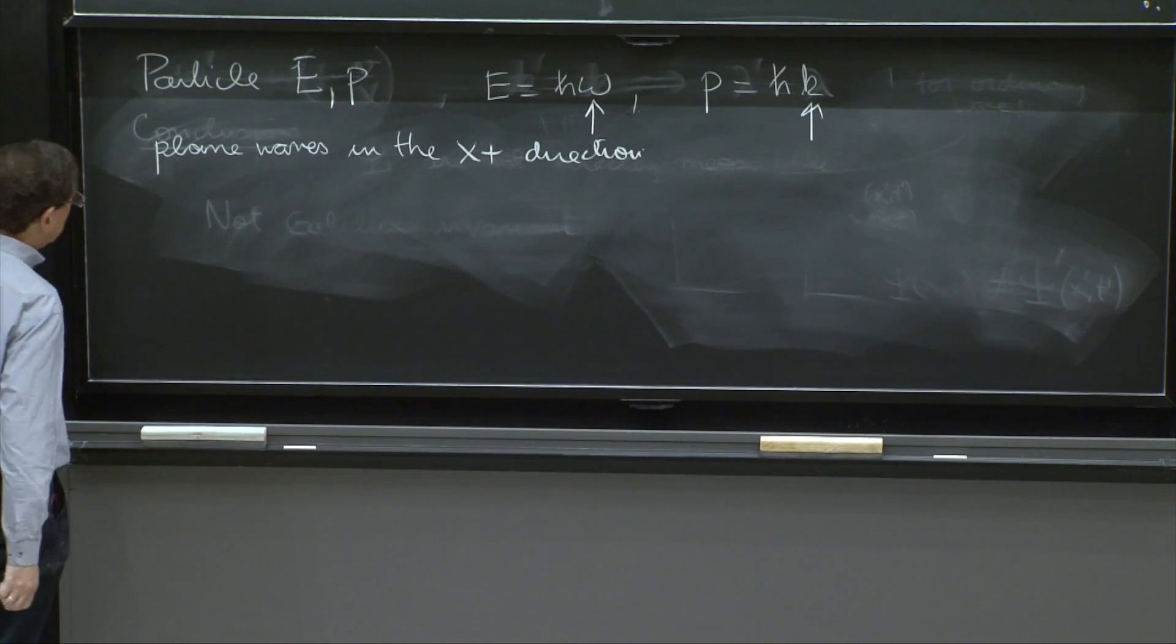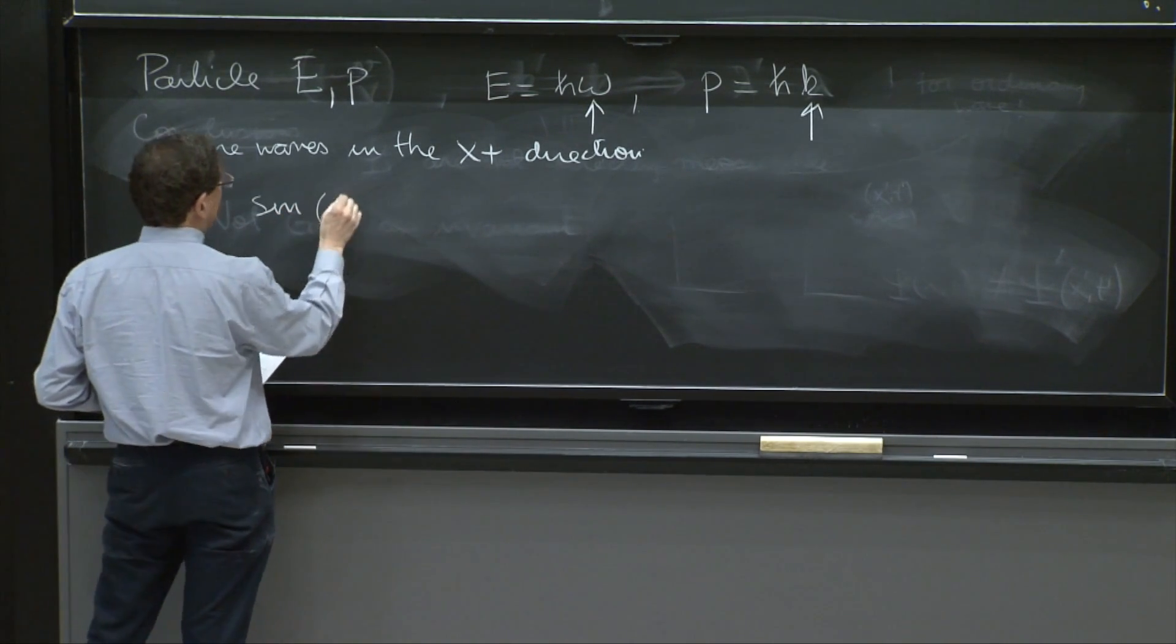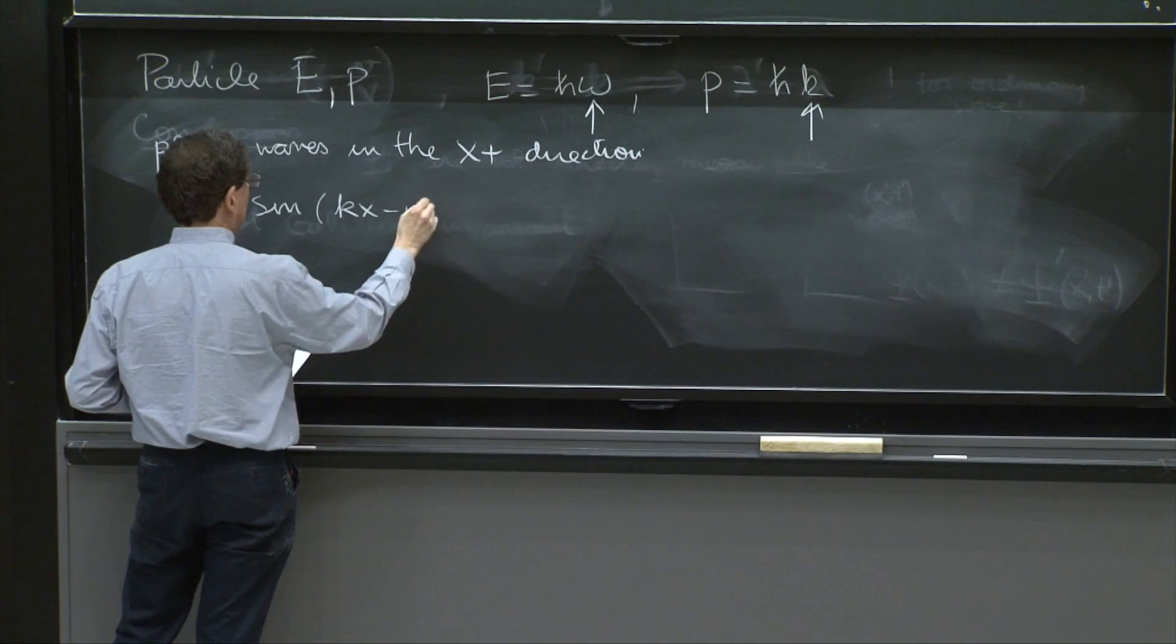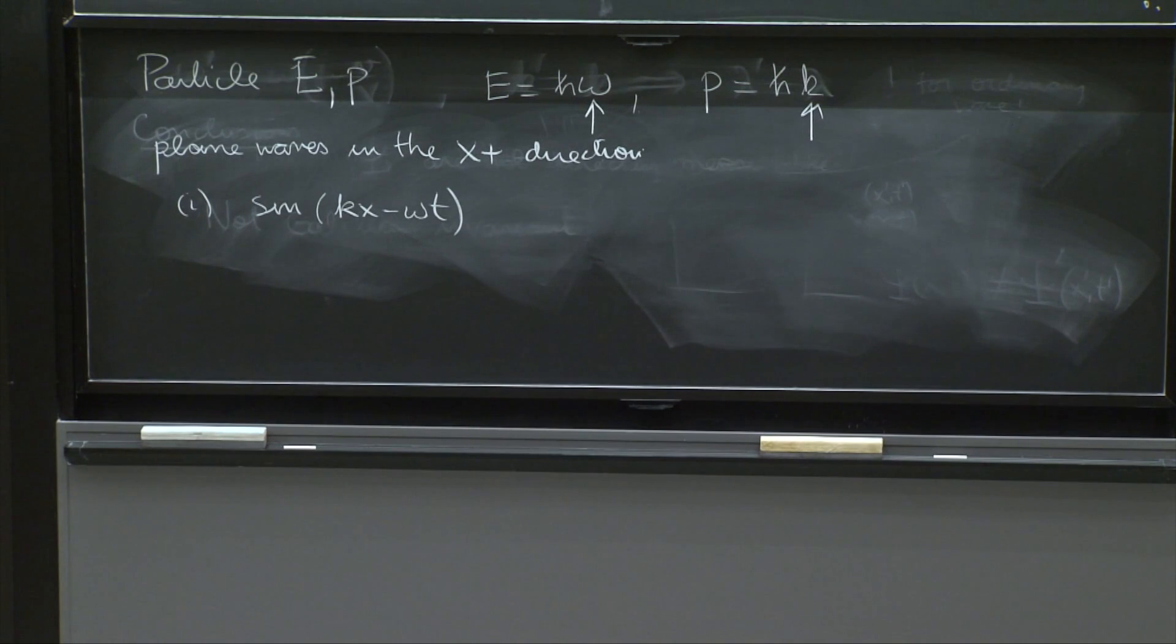So what could the wave be? Well, the wave could be sine of kx minus omega t. Maybe that's the de Broglie wave.